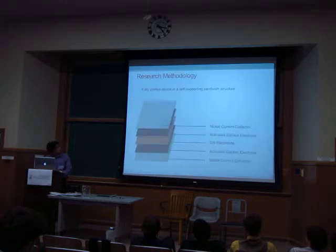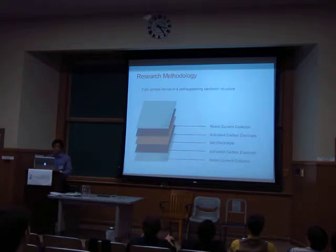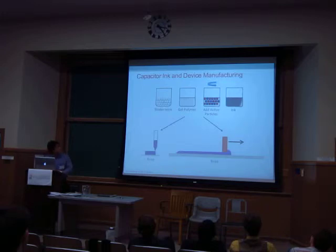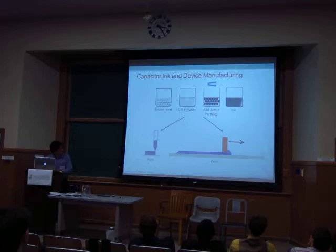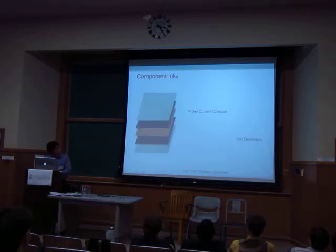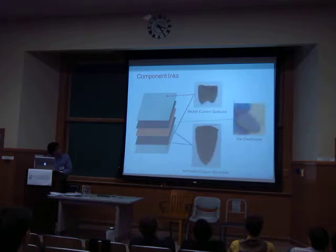Now for my research methodology. My approach was to fully print a self-supporting sandwich structure, with the electrode sandwiching a gel electrolyte, then sandwiched by a current collector. Self-supporting in this instance means that there are no casings or shells required to keep the device together. In order to actually print these devices, it requires some sort of ink. The ink-making process is relatively simple: dissolve a polymer binder into a solvent, add the particles, mix, and then print. The component inks when dry are about 50 microns thick, which is less than the diameter of a human hair.